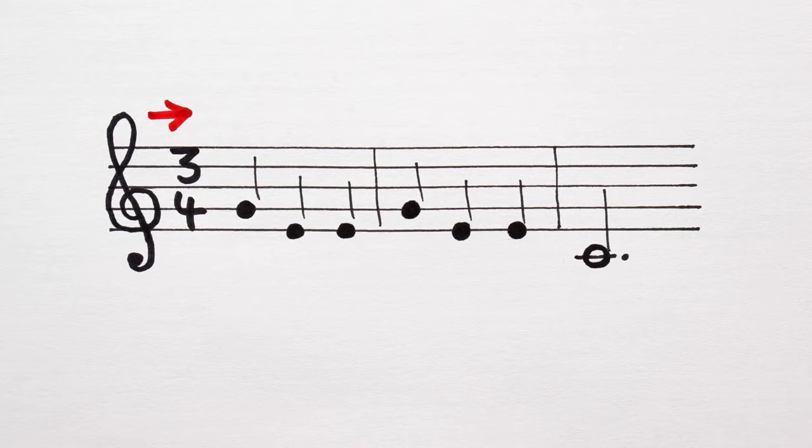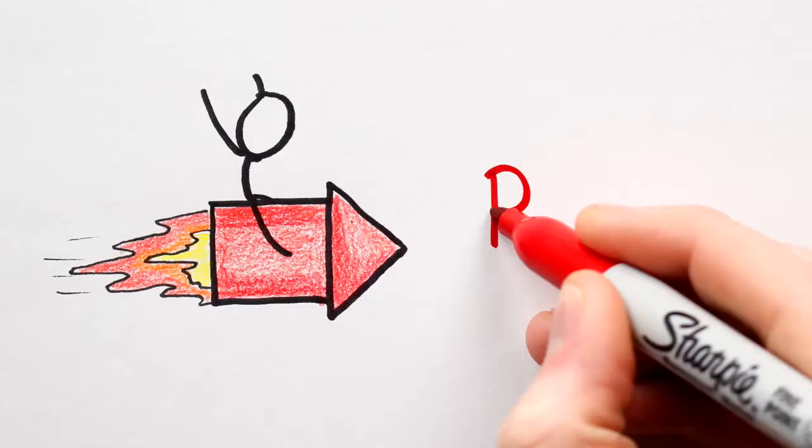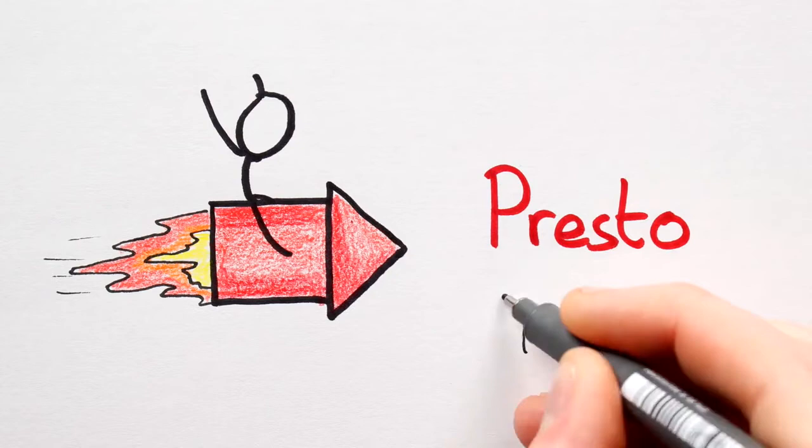From quickest to slowest the most common tempo markings are presto, allegro, allegretto, moderato, andante, adagio and largo. Presto tells us to play fast.